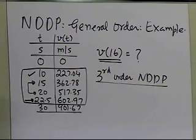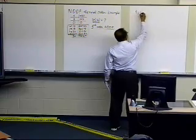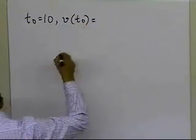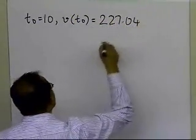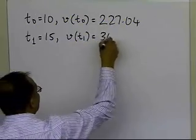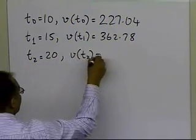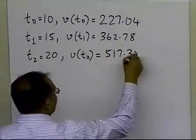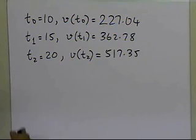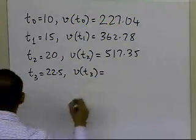Let's write down what t0, t1, t2, and t3 are, along with the corresponding velocities. t0 is 10 and the velocity at this data point is 227.04. t1 is 15 and the velocity at t1 is 362.78. t2 is 20 and the velocity at this time is 517.35 — units of meters per second for velocity and seconds for time. At t3 = 22.5 seconds, the corresponding velocity is 602.97.